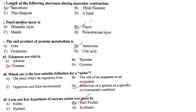Pearl mother layer is called nacre — also known as mother of pearl. It is an organic-inorganic composite material produced by some mollusks as an inner shell layer, and it is also the material from which pearls are composed. The end product of protein catabolism in animals is ammonia, which may be excreted as ammonia, urea, or uric acid depending on the animal. Answer is option B.